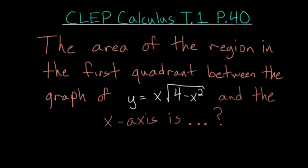For problem 40, the area of the region in the first quadrant between the graph of y equals x times the square root of 4 minus x squared and the x-axis is what?